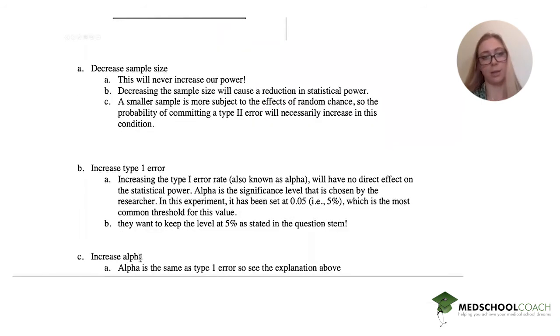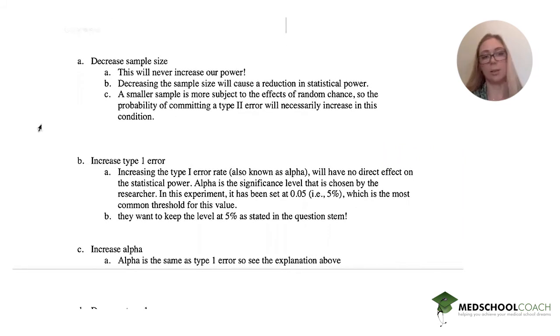Same thing as above, increasing alpha is the same thing as increasing type 1 error. So we don't want that. You could have knocked both of these out if you knew that alpha and type 1 error were the same thing.